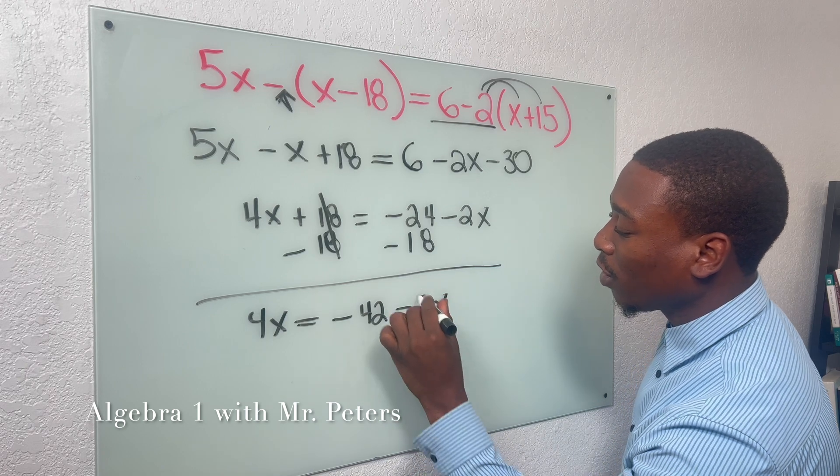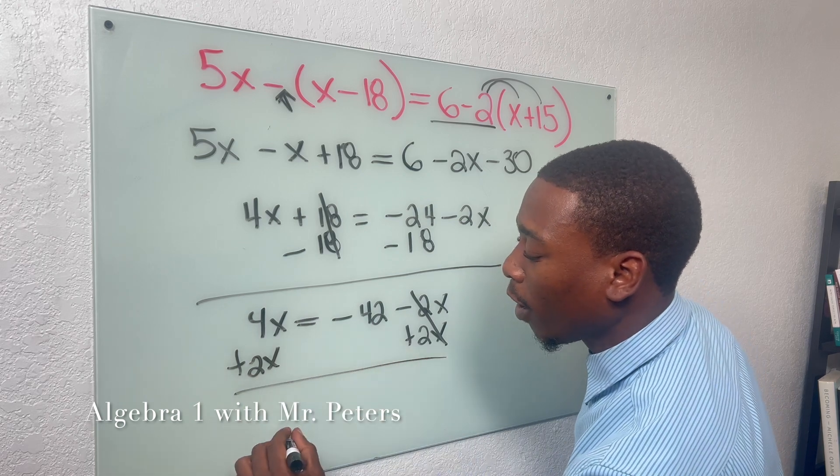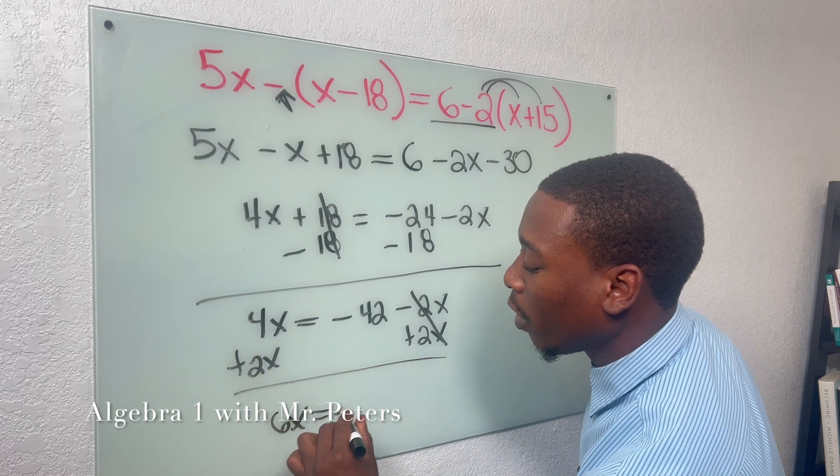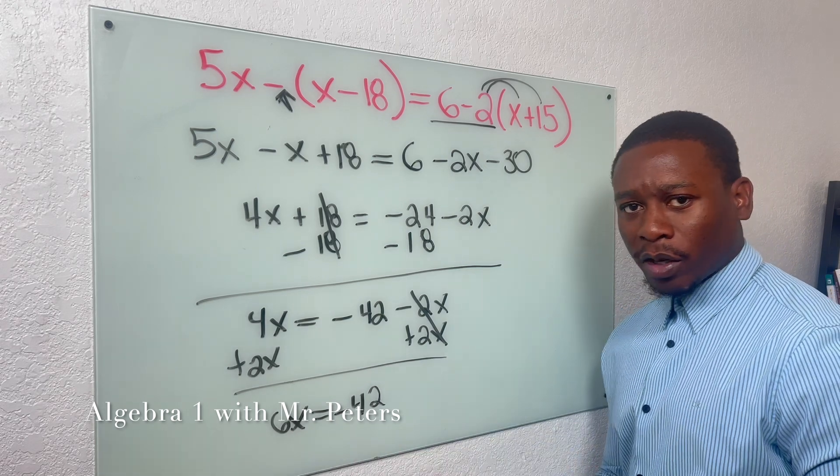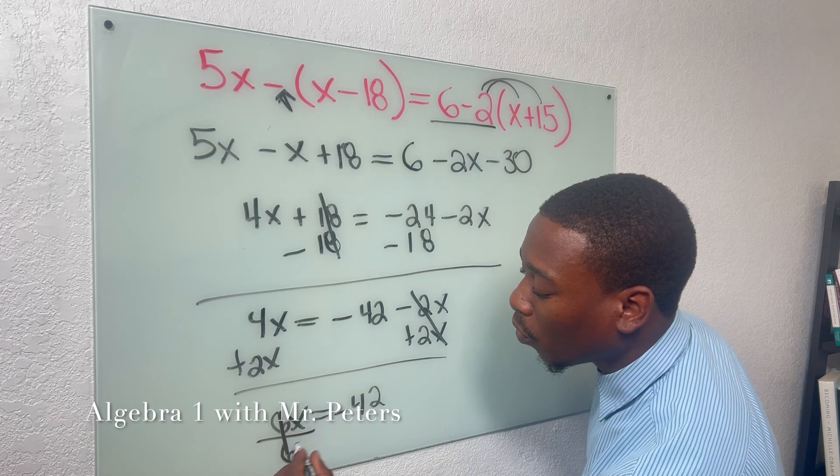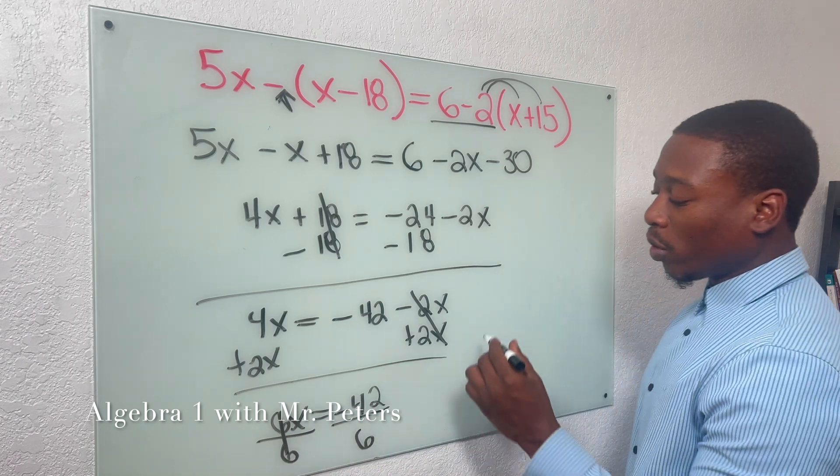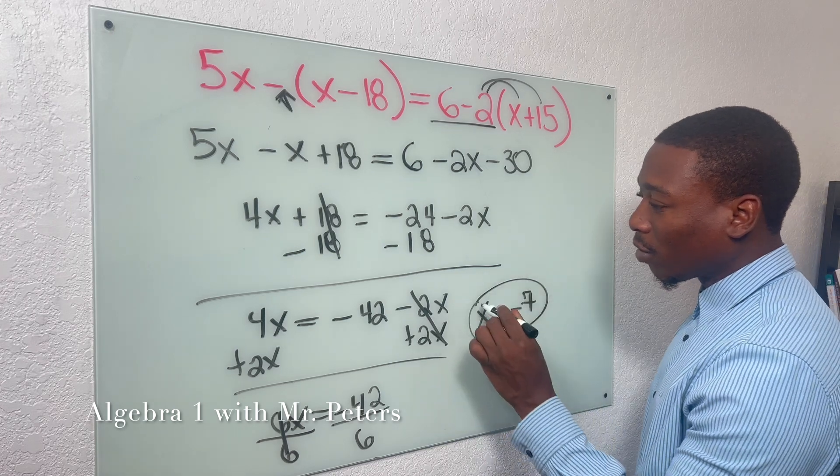We're going to combine our x's by moving 2x to the other side, and what we're going to have is 6x is equal to negative 42. And just remember, variable and constant have to be on the opposite side, or else our sign can possibly be wrong. So once I simplify this, we're going to get negative 7 as an answer.